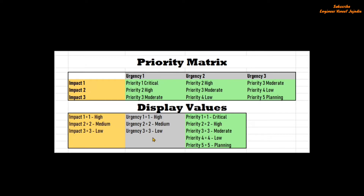This is how you read the Priority Matrix: if the value of impact is 1 and urgency is 1, then the priority will be 1 Critical. Impact 1 is 1 High and Urgency 1 is 1 High. If the impact is 1 and the urgency is 2, then the priority will be 2 High. If impact is 1 and urgency is 3, then the priority will be 3 Moderate. That's how the priority field follows this particular matrix.